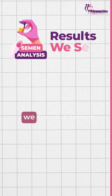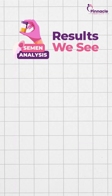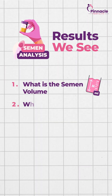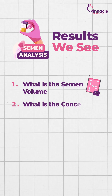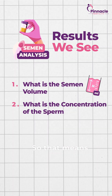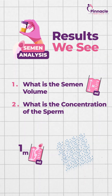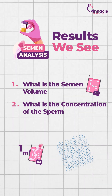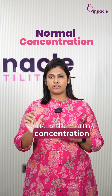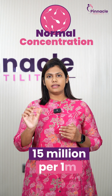So what are the basic things we see in a semen analysis? The first one is the volume of the semen, and the second one is the concentration of the sperms — that means how many millions of sperms are present in 1 ml of the semen. Usually the normal concentration of sperms is 15 million per ml.